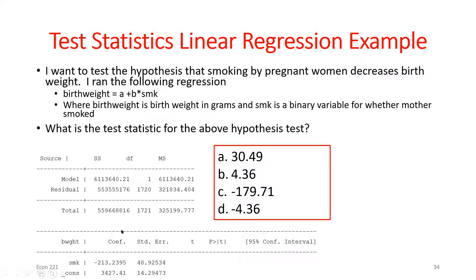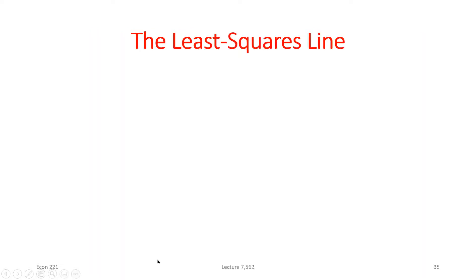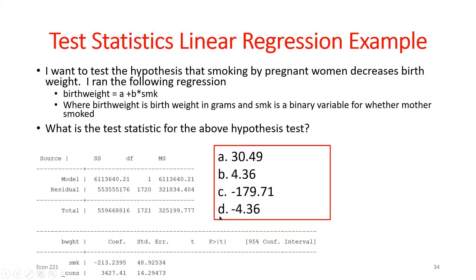If I wanted to compute the test statistic for the slope coefficient on smoking and it wasn't given in the output, how would I find it? From regression output, the test statistic is simply the coefficient divided by the standard error. Doing that: roughly negative 200 divided by about 50 gives around negative 4. Plugging those values in exactly gives negative 4.36.